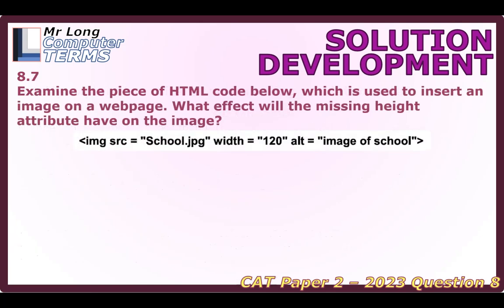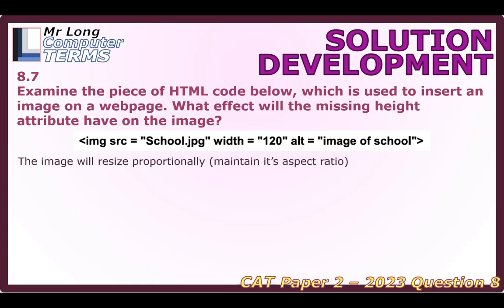Let's go over to question 8.7 where we've got some HTML. We are inserting an image, and they're asking about the effect if the height attribute is not mentioned. You can see the width equals 120, but the height is not mentioned. If we don't mention one of them, the image will be resized proportionally — it will maintain its aspect ratio. If we did mention the height and the ratio didn't match the actual image, it would distort.